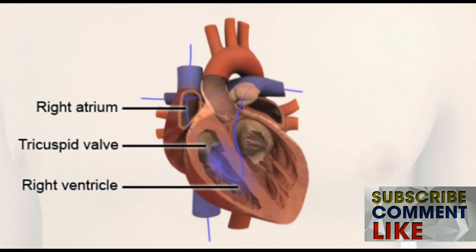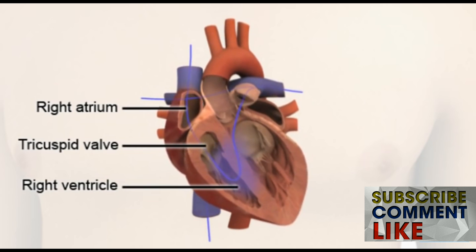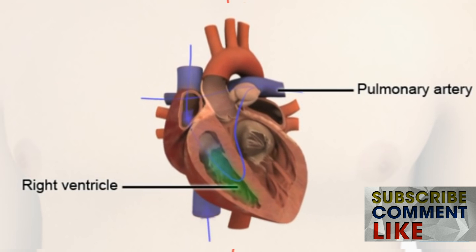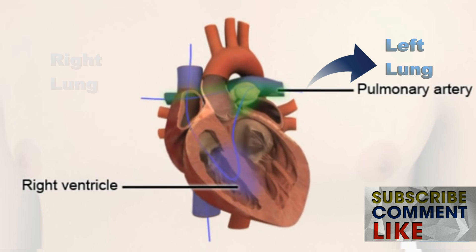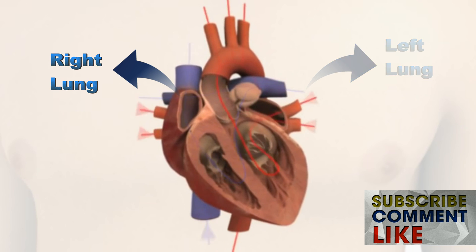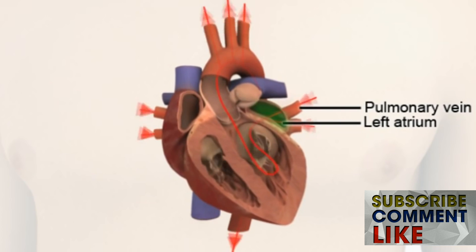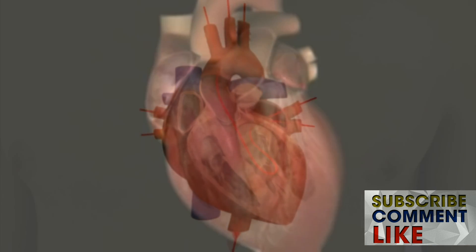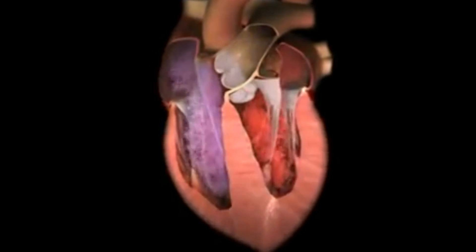From the right atrium, blood begins its journey through the pulmonary cycle. It descends into the right ventricle through the tricuspid valve. When the ventricle contracts, the blood is pushed into the pulmonary artery, which branches into two parts — one going to the left lung and one to the right. The fresh, oxygen-rich blood then returns to the left atrium of the heart through the pulmonary veins.